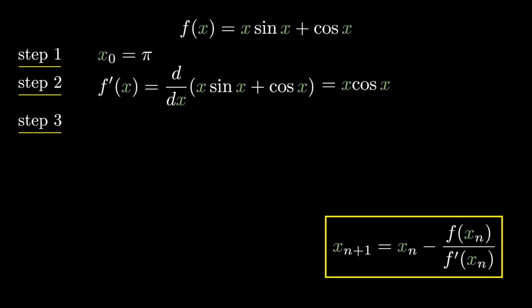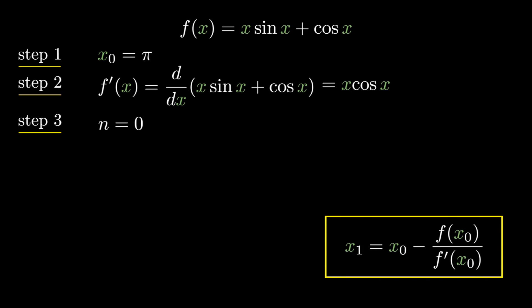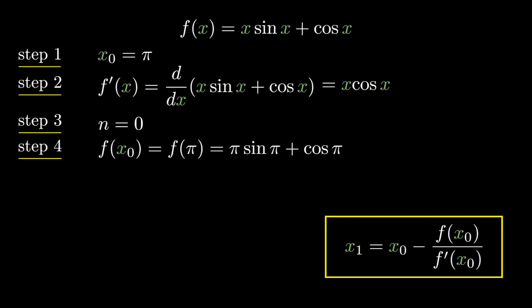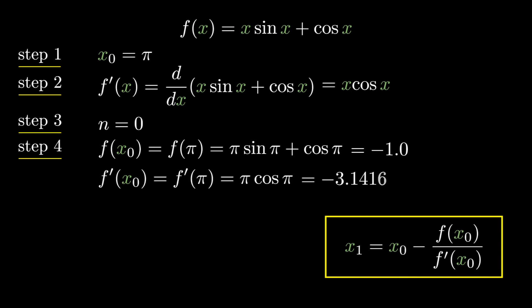Step 3: let's find x₁ by substituting n=0 in Newton-Raphson formula, giving x₁ = x₀ − f(x₀)/f'(x₀). In step 4, we calculate these values. f(x₀) = f(π): sin(π)=0 and cos(π)=−1, so f(x₀) = −1. f'(x₀) = f'(π) = π·cos(π) = −3.1416 (since cos(π)=−1 and π≈3.1416).